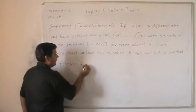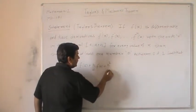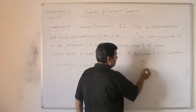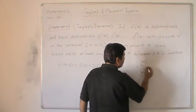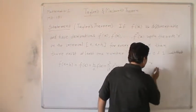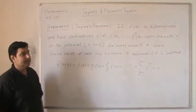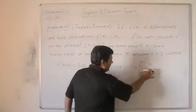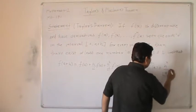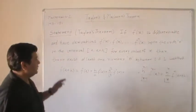will be equal to f(a) plus h/1! · f'(a) plus h²/2! · f''(a) plus and so on up to the nth term, h^(n-1)/(n-1)! · f^(n-1)(a), plus a remainder term h^n/n! · f^n(a + θh). This is the statement of Taylor's theorem.